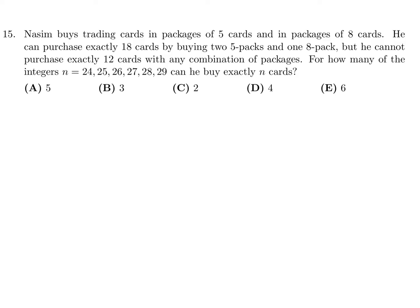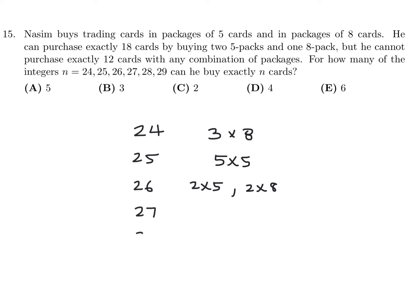Nassim buys trading cards in packages of 5 or 8. He can buy exactly 18 cards (two 5-packs and one 8-pack) but cannot buy exactly 12. For integers n from 24 to 29: 24 = three 8-packs; 25 = five 5-packs; 26 = two 5-packs plus two 8-packs; 27 cannot be done; 28 = four 5-packs plus one 8-pack; 29 = one 5-pack plus three 8-packs. Five of these values can be achieved, so number 15 is A.